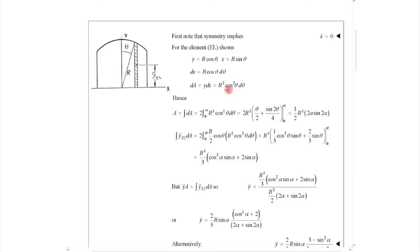Therefore I have r square cosine square theta d theta. In that way I could get the area which is 2 times 0 to alpha and then I have y dx substituted in the forms of theta.